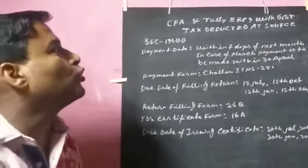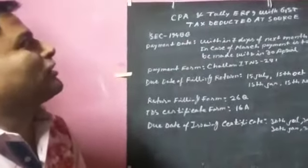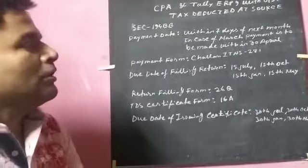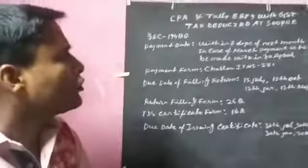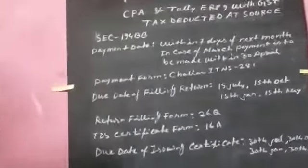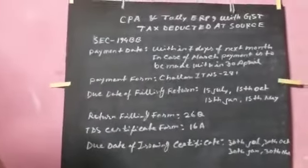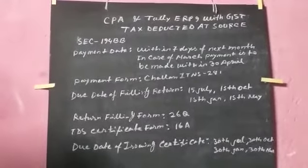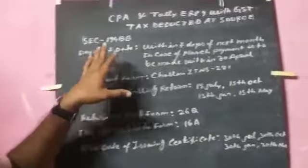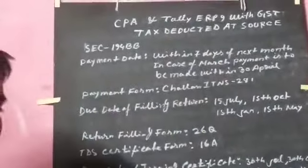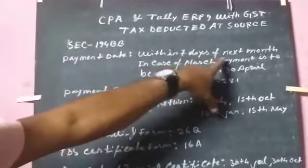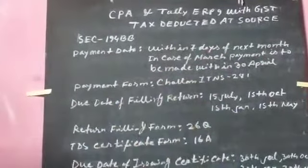For your very first class, it is Tax Deducted at Source — TDS. The TDS falls under Section 194BB. In this section, we have the basic concept of Section 194BB. The other concept is also under Section 194BB.